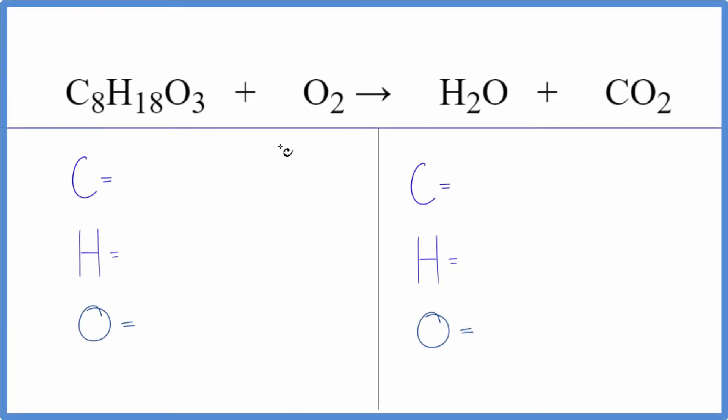Okay, so this equation looks like a lot of fun. Let's give it a try. Let's count the atoms up first and then balance the equation. We have 8 carbons, 18 hydrogens, and then 3 plus 2, 5 oxygens on the reactant side.